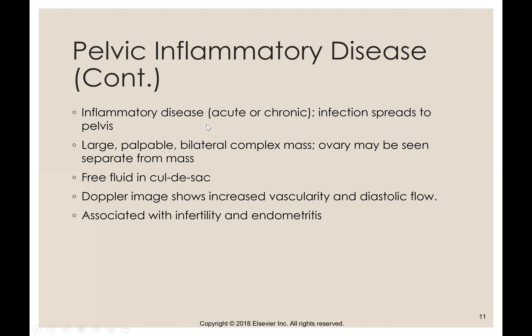Pelvic inflammatory disease can be acute or chronic — acute if it just started, chronic if it's left untreated. If left untreated, these patients get very sick. Stage three and stage four PID are called tubo-ovarian abscesses and tubo-ovarian complexes, where the ovary may be seen separate from a large nasty mass. You can have free fluid in the cul-de-sac. Doppler imaging shows increased vascularity and diastolic flow, and PID is associated with infertility.